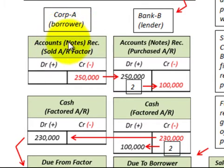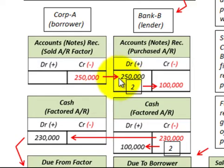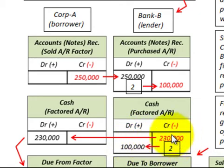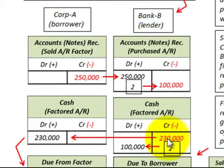Corporation A, the borrower, is selling accounts receivable to Bank B, the lender. Corporation A would credit or reduce accounts receivable by $250,000, and Bank B would debit their accounts receivable by $250,000. Then Bank B will pay cash to Corporation A for $230,000. The receivables had a face value of $250,000, but there's a discounted cash payment of $230,000. Bank B credits their cash account for $230,000, and Corporation A debits their cash account for $230,000.